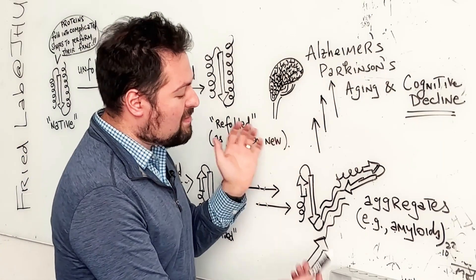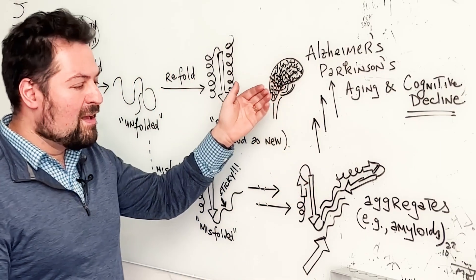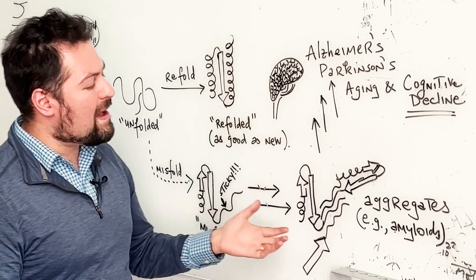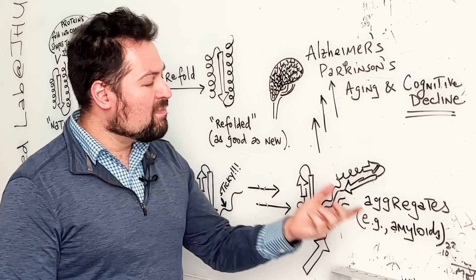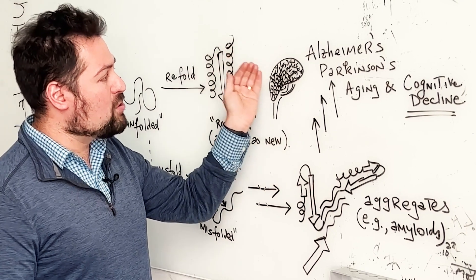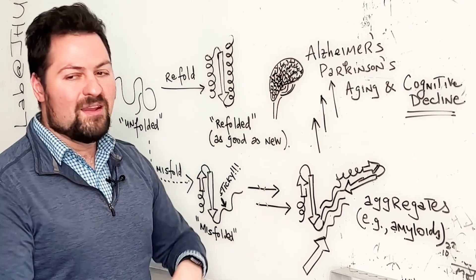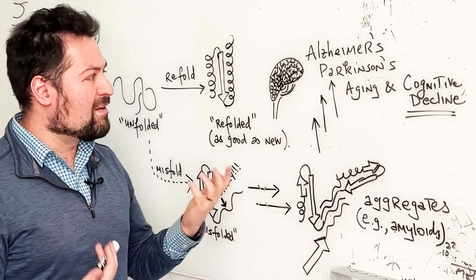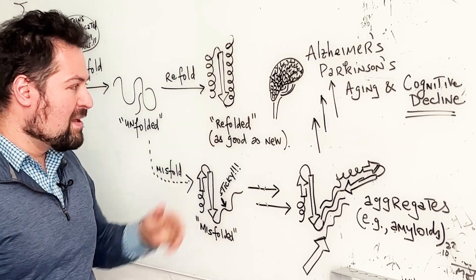But when this same process happens inside your brain, and in particular, when we form aggregates that are called amyloids, these are believed to be associated with the wide range of neurodegenerative diseases that afflict an increasingly large number of Americans like Alzheimer's, Parkinson's, etc.